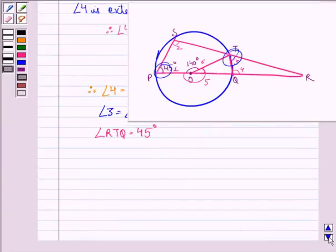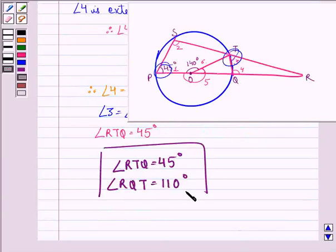So our answer is: angle RTQ equals 45 degrees and angle RQT equals 110 degrees. I hope you understood the solution and enjoyed the session. Have a good day.